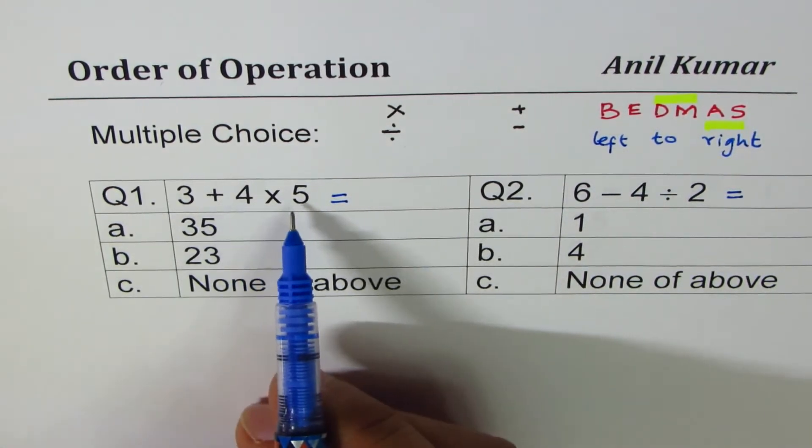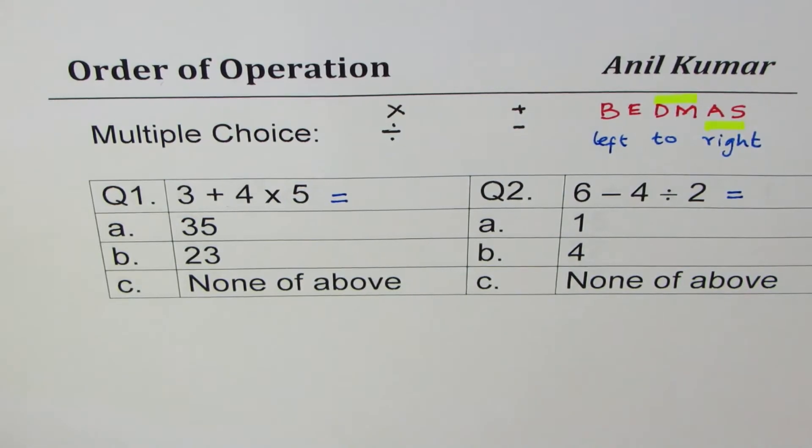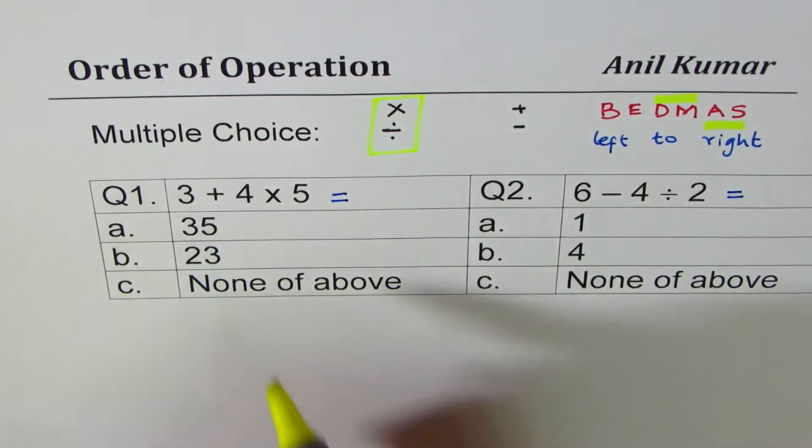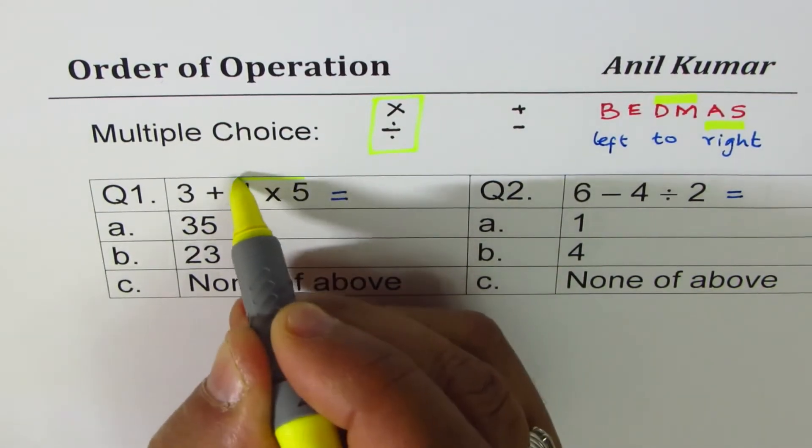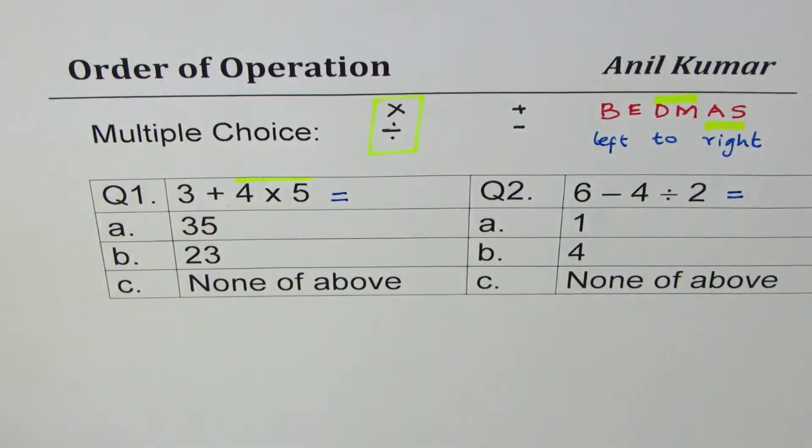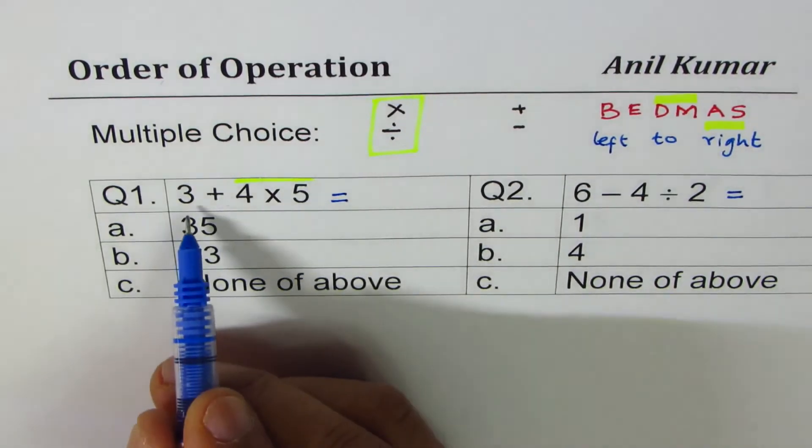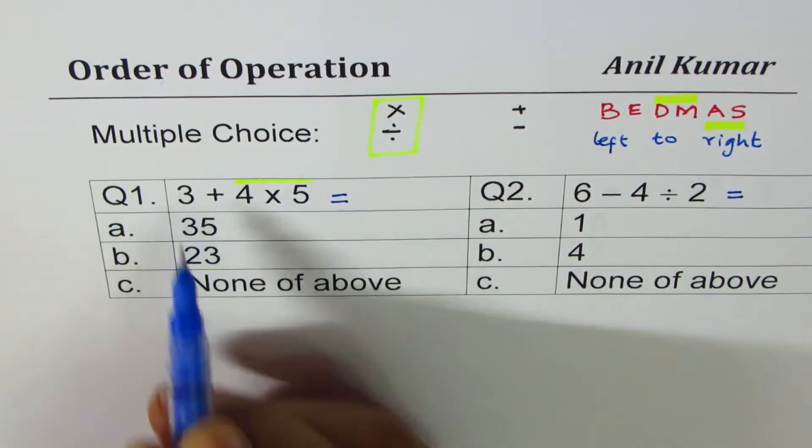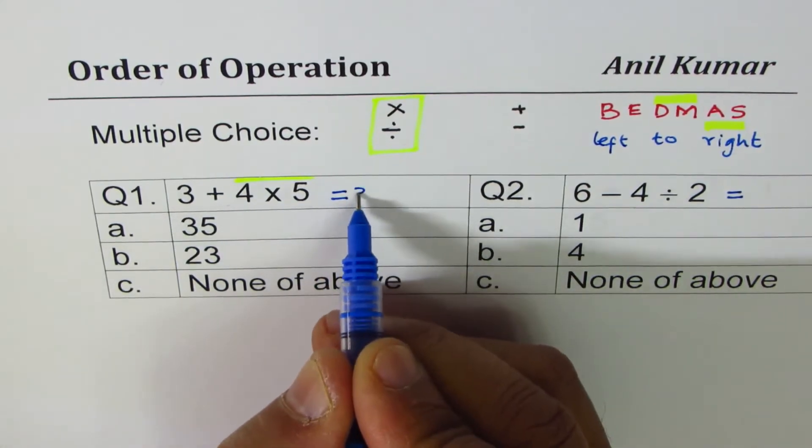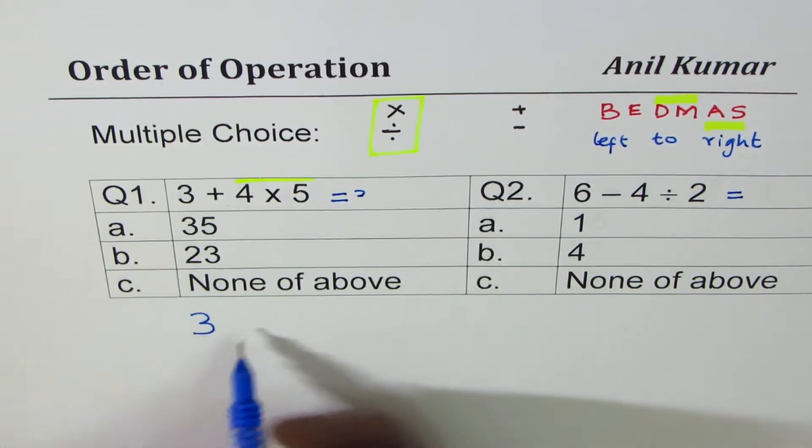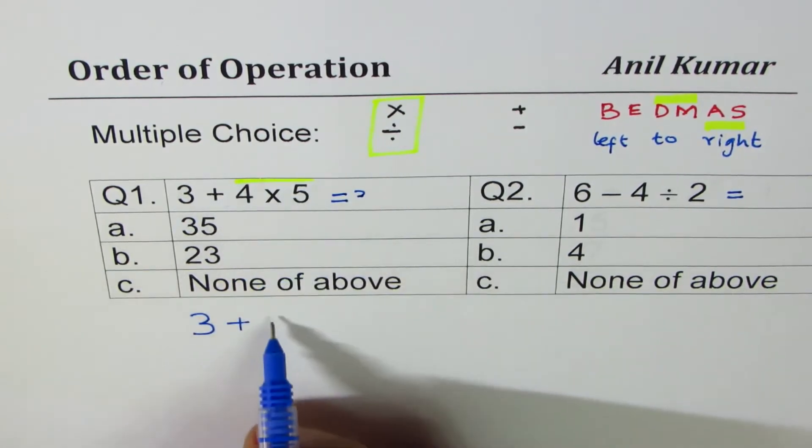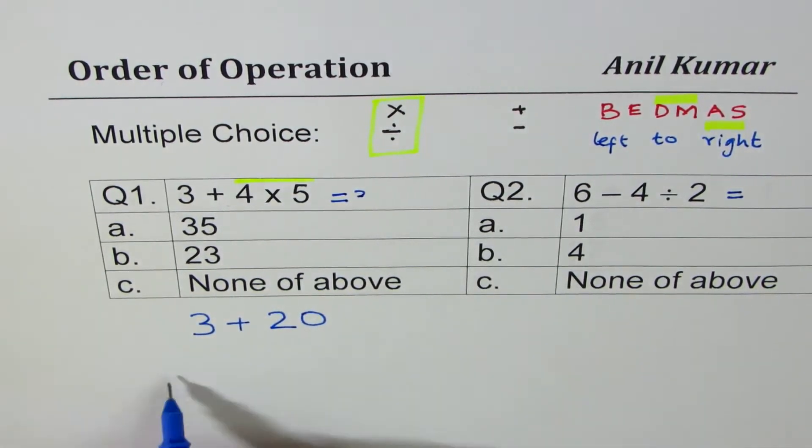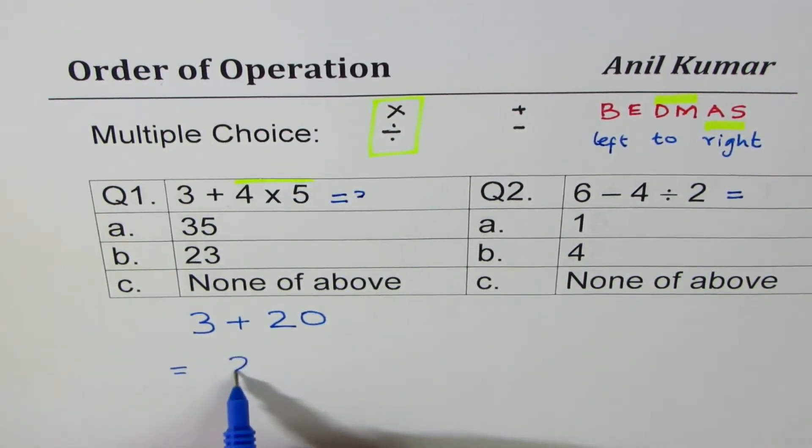As you can see, we have to do multiplication first. Look for multiplication and division. We have to do 4 times 5 first. Do not add 3 and 4, then you'll get the wrong answer. Just write 3 as such. We get 3 plus what is 4 times 5, which is 20. So this is the first step. And 20 plus 3 equals 23.